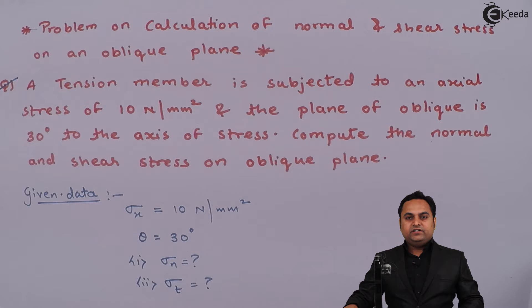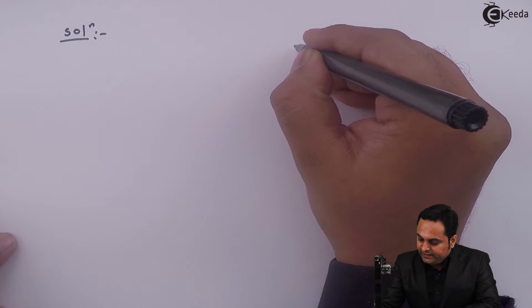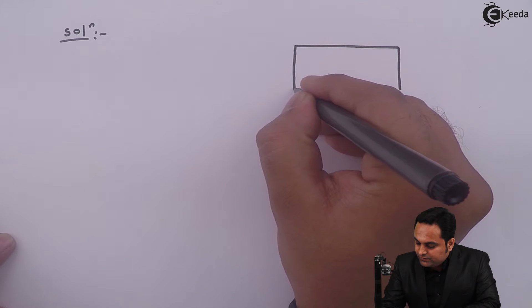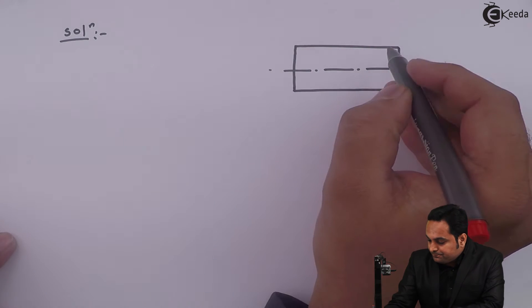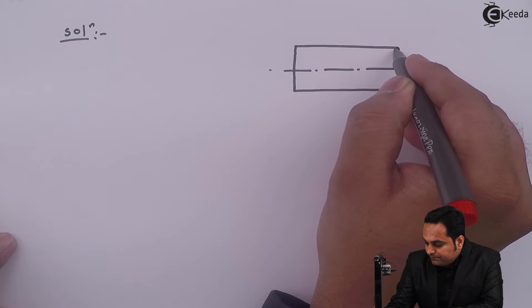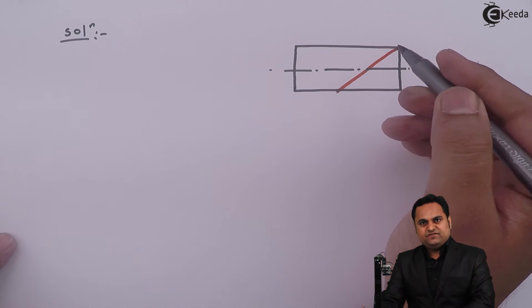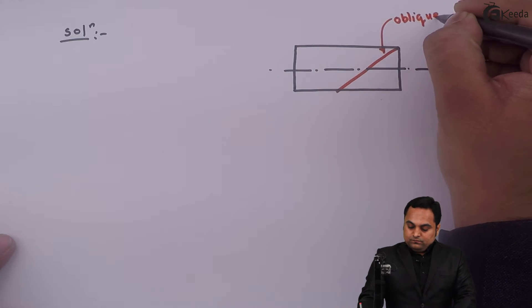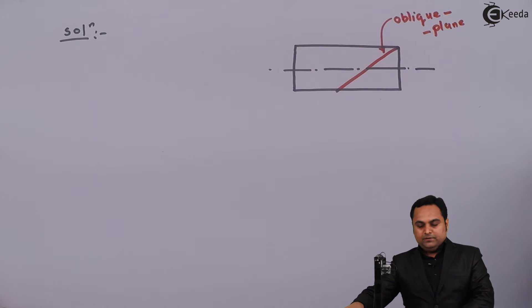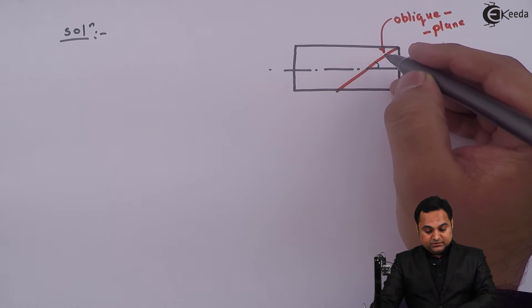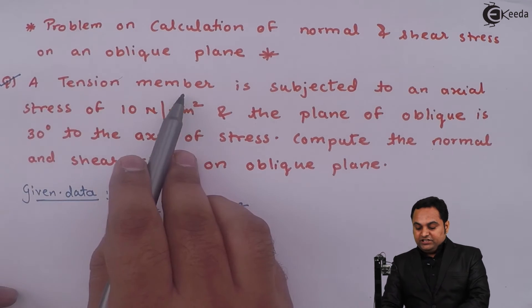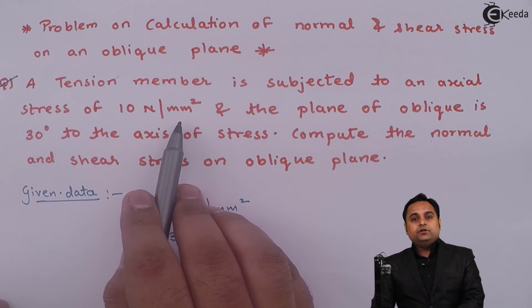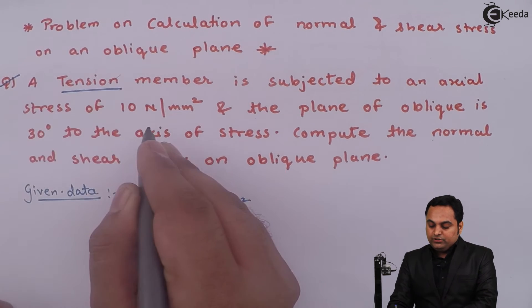Now let us get the solution to this problem. In the solution part, I'll draw a diagram considering it to be a rectangle. This is the axis of the rectangle, and we have an inclined plane which is the oblique plane — shown here in red. The angle of the oblique plane is 30 degrees, and this angle is 90 degrees. Since it is a tension member, the nature of the stress is tensile.